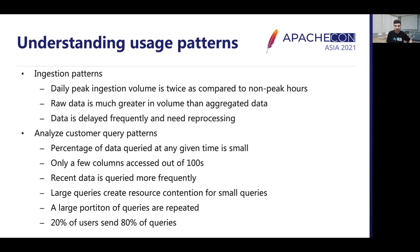This uncovered some really interesting facts. For ingestion, we observed that daily peak ingestion volume is usually twice as compared to non-peak hours. Raw data was much greater in volume than aggregated data. Data was frequently delayed and needed reprocessing. Analyzing query patterns revealed that the percentage of data queried at any given time is very small compared to the overall dataset. Only a few columns were accessed out of hundreds of columns. Recent data was queried much more frequently than old data. Large queries created resource contention for smaller queries, and a large portion of queries were repeated. 20% of users sent almost 80% of the queries.